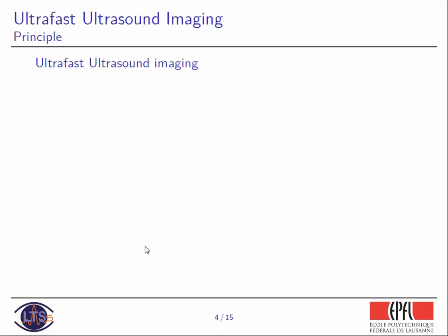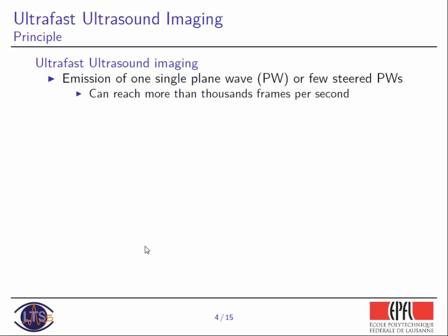So first, ultrafast ultrasound imaging. I think all of you may know that, but in comparison to the classical DAS method, in which we use focused beams at emission, ultrafast ultrasound imaging is based on emitting a single plane wave or fused-tilted plane waves. The main advantage is that it can reach more than 1,000 frames per second. But the price to pay is sometimes lower image quality than the classical method. That's why we need compounding.